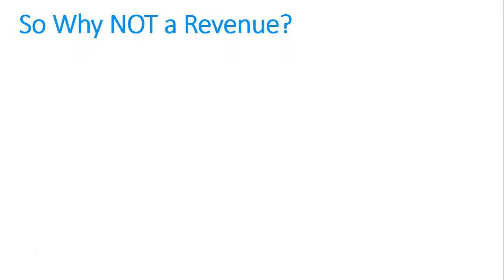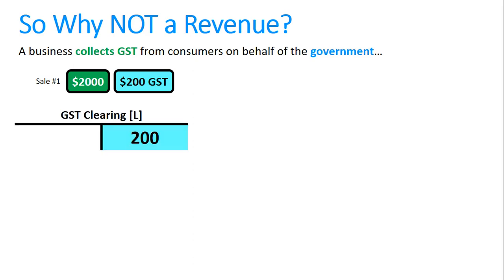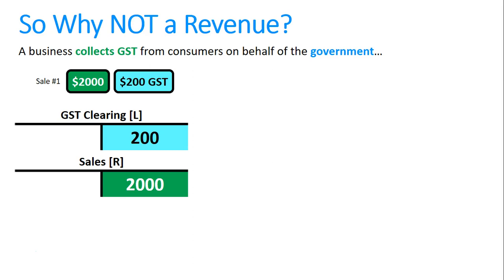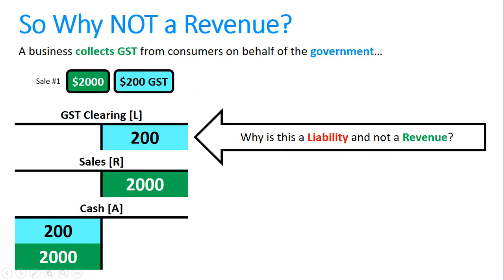Getting back to our question: why isn't money collected for GST on a sale treated as revenue? The business charges two thousand dollars for a sale and collects two hundred dollars GST. The two hundred dollars increases a liability — that's a credit. The two thousand dollar sale is revenue, also a credit. Both go to cash as a debit — two hundred plus two thousand equals two thousand two hundred dollars total. But they are for different things: two hundred dollars for a liability and two thousand dollars for revenue.